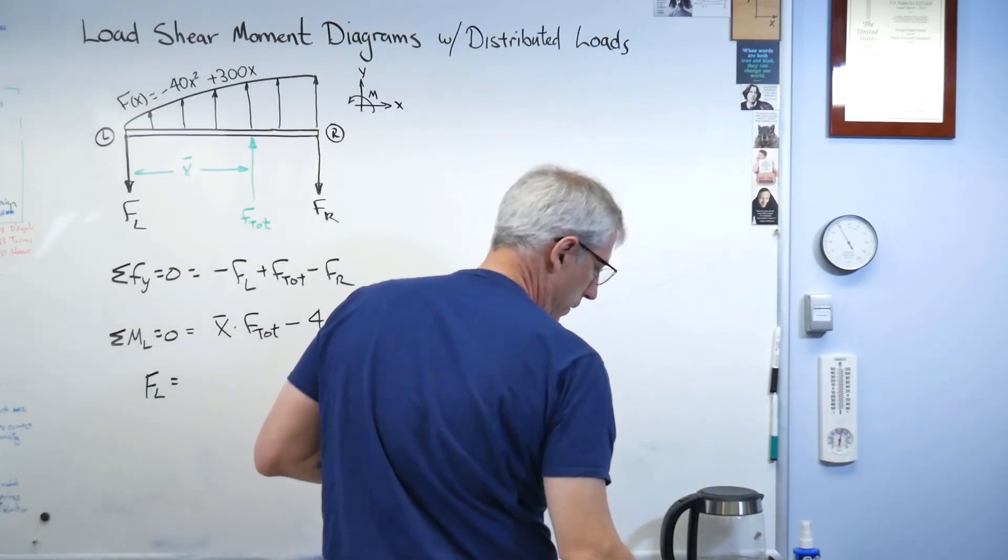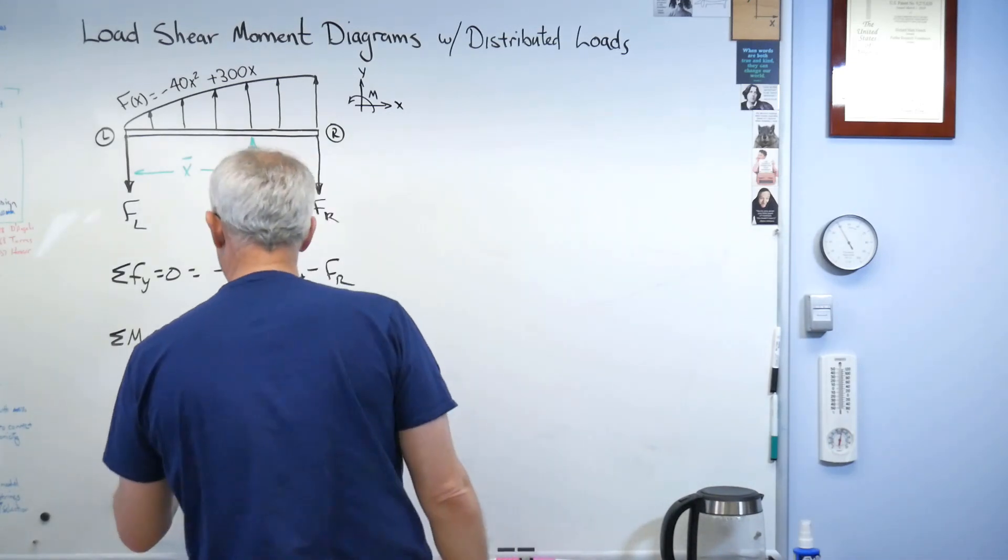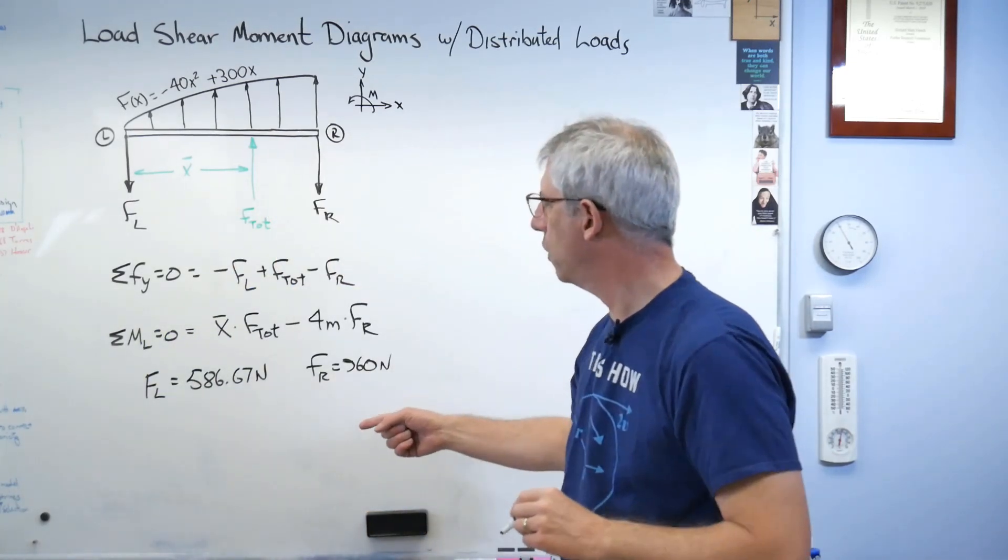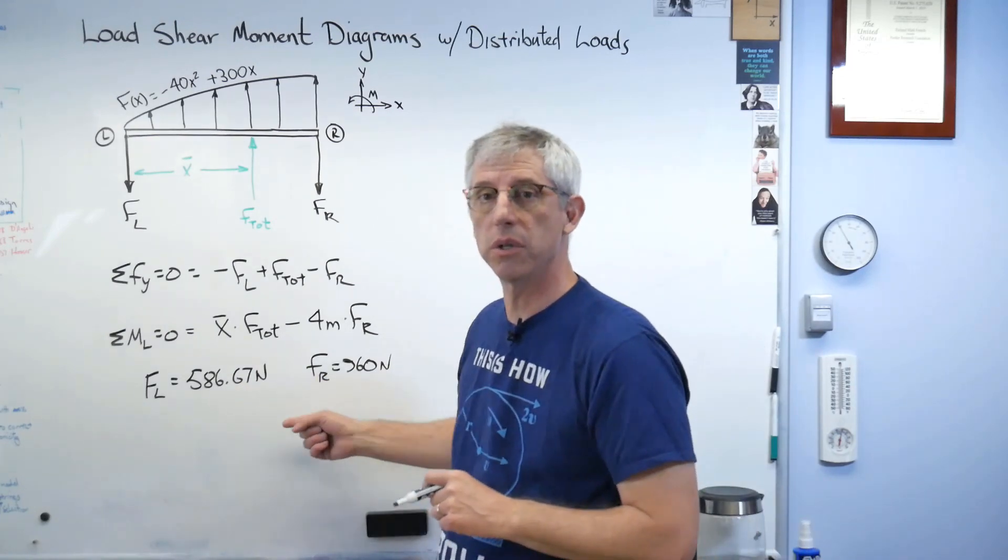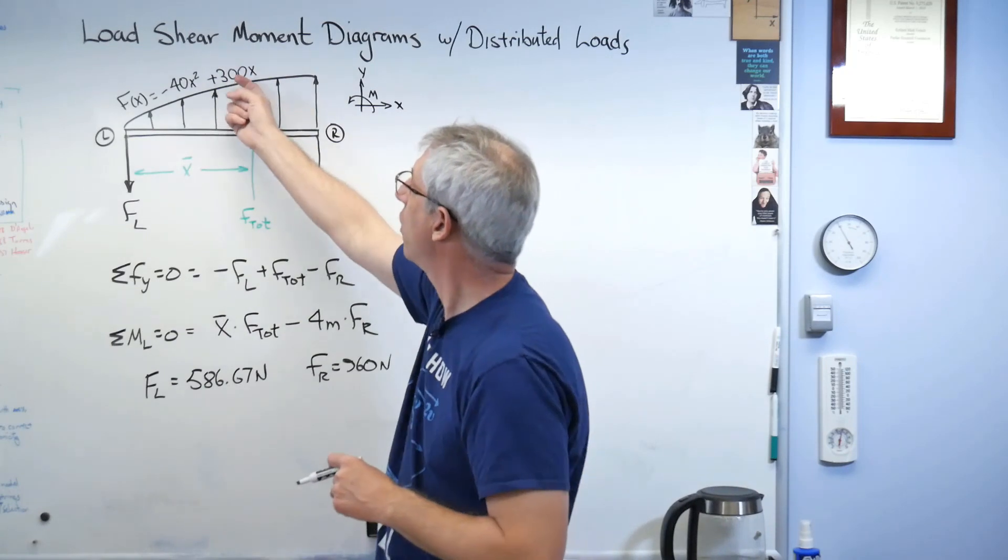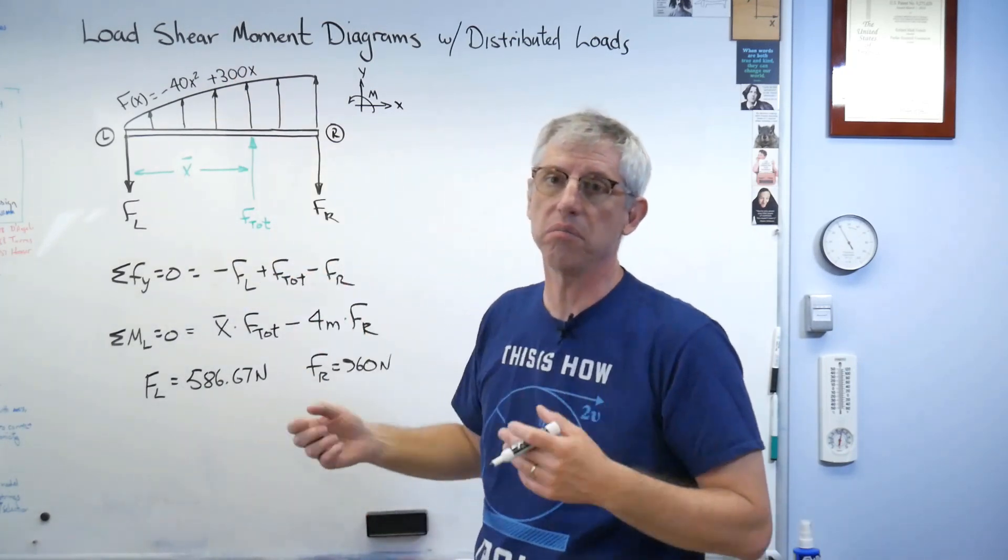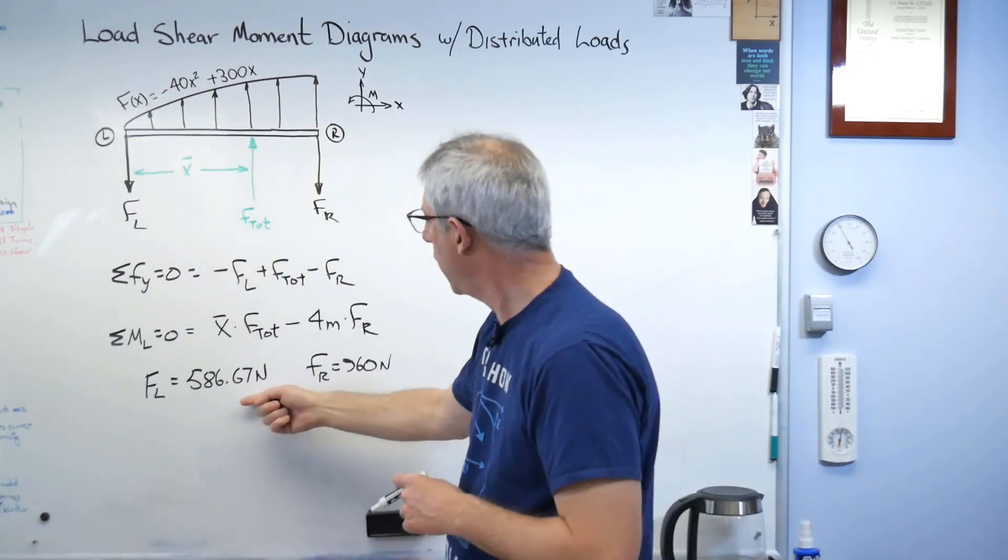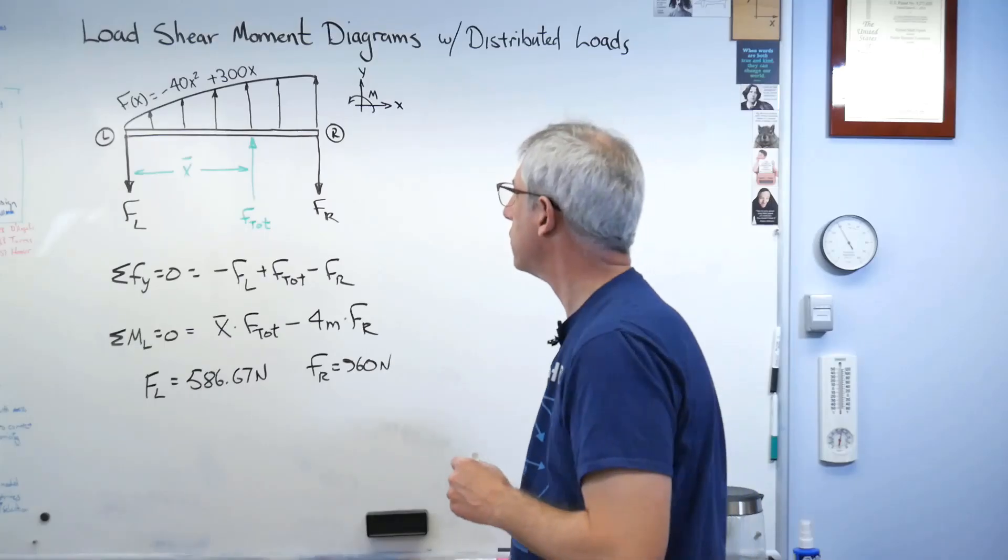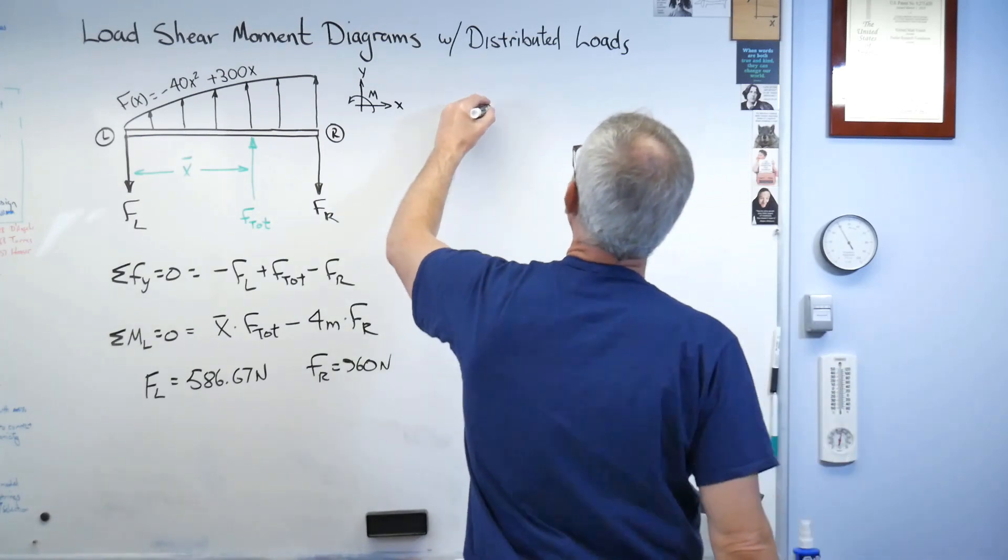X bar times F total, and I know what those are now, I'll just put the numbers in later. FR is pointing down, so that's going to try to rotate the beam clockwise, which is counter to my sign convention, makes this negative. If you solve those, I'm going to find out that FL equals 586.67 N and FR equals 960 N. What do the positive numbers mean? It means I drew the arrows in the right direction. I guessed since all the forces here are up, those would be down. Seemed like a safe bet. I've got everything I need here now.